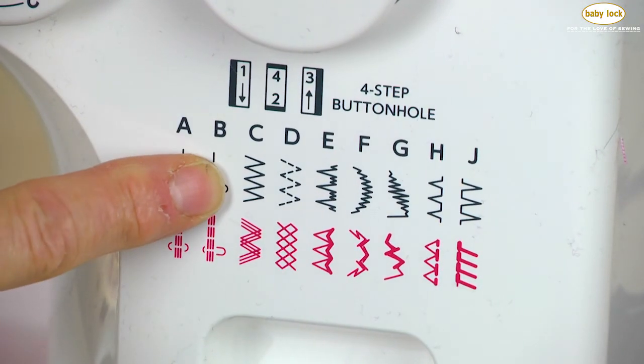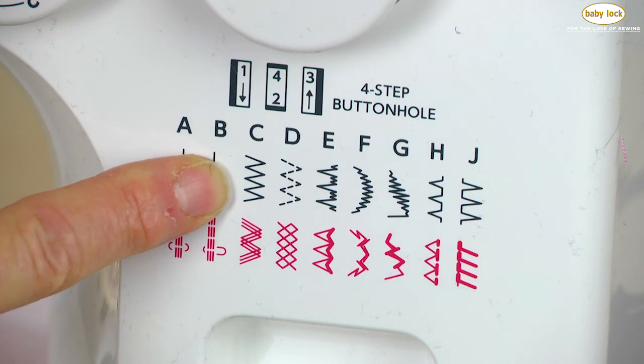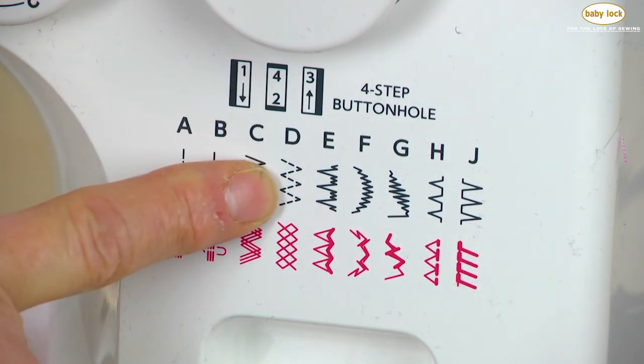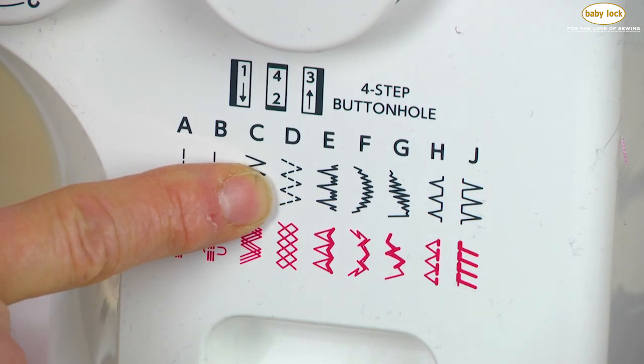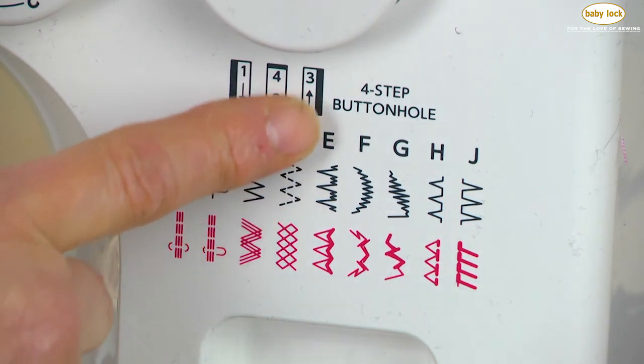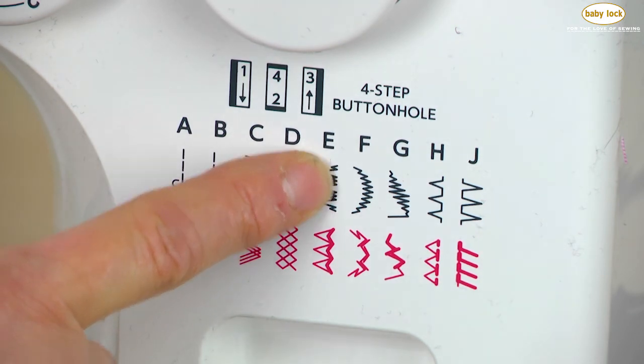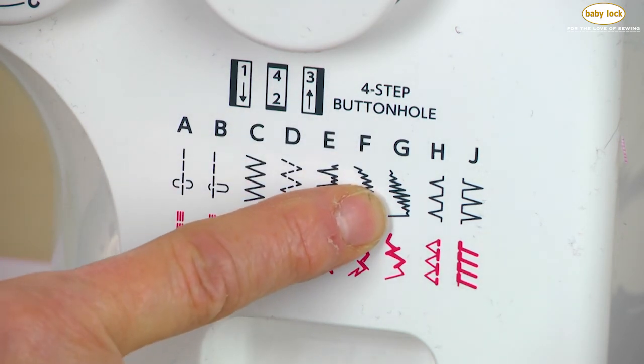One of them would be that zigzag stitch. You can leave it as it is, or you can turn it into a satin stitch. Even the three-step zigzag is a lot of fun to use. Then we have stitch number F, which is more of a satin shape decorative stitch, and stitch G, which is also a satin stitch decorative stitch.